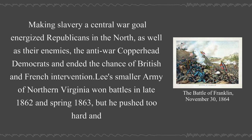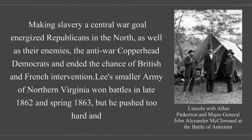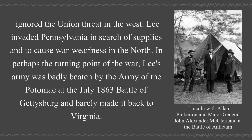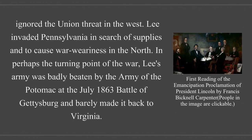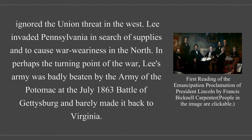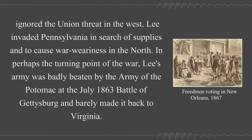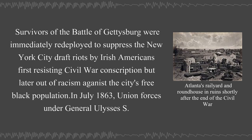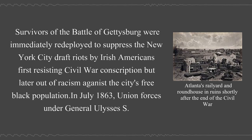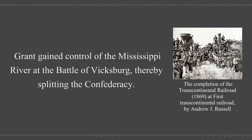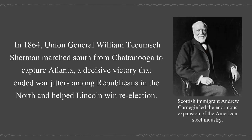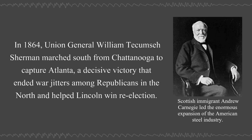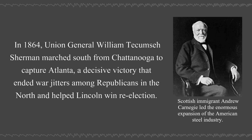Lee's smaller army of Northern Virginia won battles in late 1862 and spring 1863, but he pushed too hard and ignored the Union threat in the West. Lee invaded Pennsylvania in search of supplies and to cause war-weariness in the North. In perhaps the turning point of the war, Lee's army was badly beaten by the Army of the Potomac at the Battle of Gettysburg in July 1863, and barely made it back to Virginia. Survivors were immediately redeployed to suppress the New York City draft riots by Irish Americans first resisting Civil War conscription. In July 1863, Union forces under General Ulysses Grant gained control of the Mississippi River at the Battle of Vicksburg, thereby splitting the Confederacy. In 1864, Union General William Tecumseh Sherman marched south from Chattanooga to capture Atlanta, a decisive victory that ended war jitters among Republicans in the North and helped Lincoln win re-election.